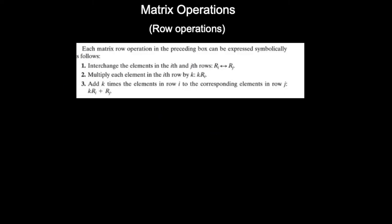Now there are certain things we are allowed to do to a matrix — these are called the row operations, since we're only manipulating the rows. The first thing we're allowed to do is interchange the elements of two rows.